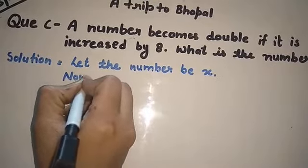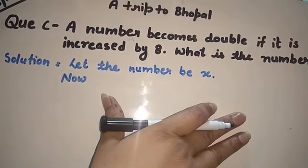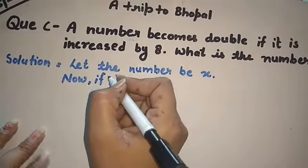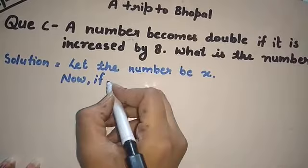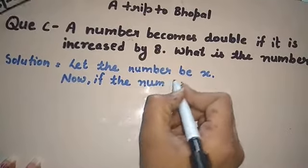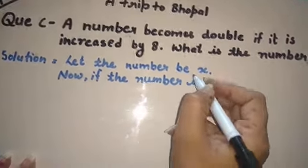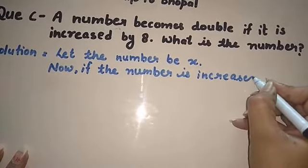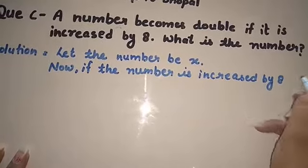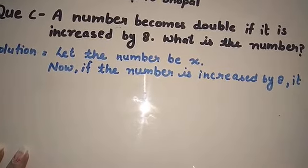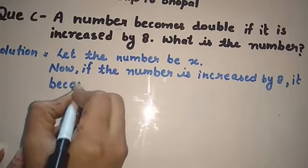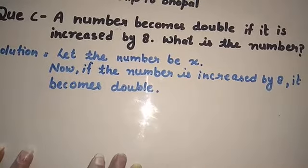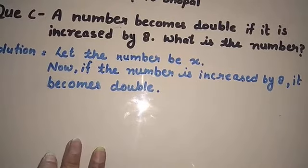So we are taking, suppose the number is X. Now, because number is not given, so we are taking, we are assuming that that number will be X. Now, if the number is increased by 8, it becomes double.